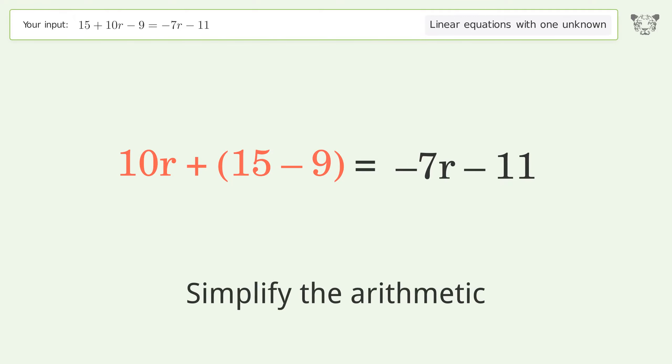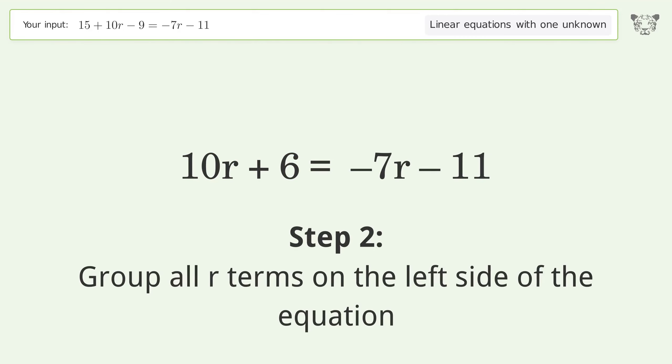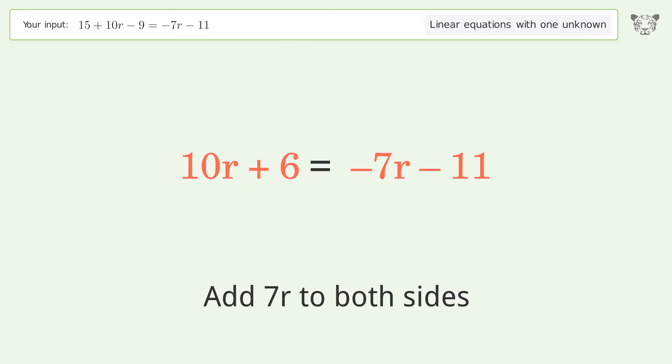Simplify the arithmetic. Group all r terms on the left side of the equation. Add 7r to both sides.